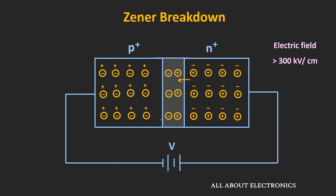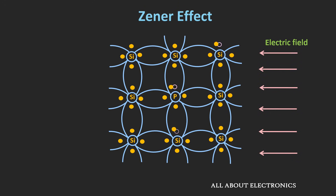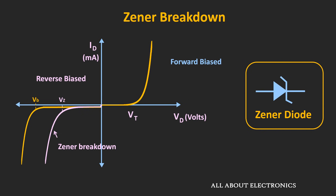Due to the heavy doping, the built-in electric field inside this depletion region will be much stronger. When this diode is reverse biased, the external electric field also adds to this built-in electric field, making the electric field in the depletion region very strong. At one particular voltage, it becomes so strong that it can knock out the bound electrons of the silicon atoms. Due to this very strong electric field, many charge carriers are generated, and due to the very narrow depletion region, they can tunnel through it and reach the other side. In this way, a lot of current suddenly starts flowing in the reverse direction, and this effect is known as the Zener breakdown effect.